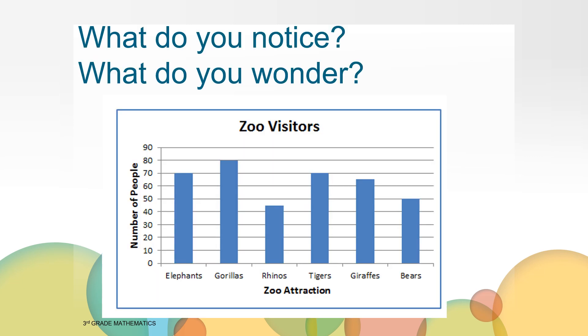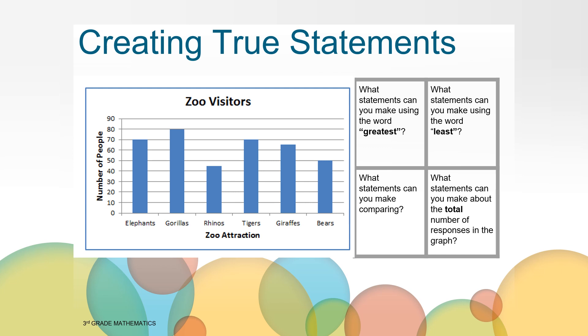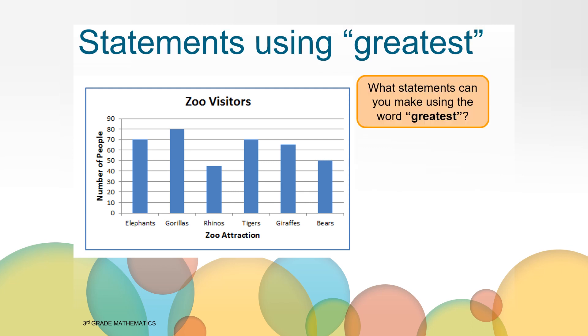Take a moment and see what you notice or what you wonder related to this bar graph. Today we are going to practice creating true statements related to our bar graphs. We are going to create four types of statements: statements using the word greatest, statements using the word least, statements that compare, and statements using the word total. Can you come up with a statement using the data from the bar graph that includes the word greatest? How about the word greater or more than?